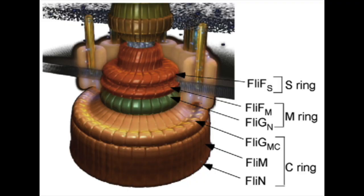This motor is made up of a rotor and a drive shaft surrounded by a bushing. The torque is generated by protons or sodium ions moving through the motor down a concentration gradient across the cell membrane.